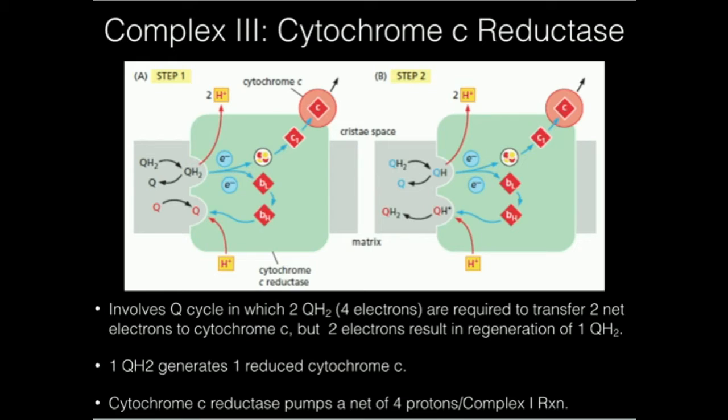In this video we're going to go over the function and physiology of complex III in the mitochondria respiratory chain. This enzyme has several names that you may have heard of. Probably the more common name is cytochrome C reductase, given the fact that it actually reduces cytochrome C using electrons from ubiquinol. It's also called cytochrome BC1, cytochrome C ubiquinol oxidoreductase, or just complex III.